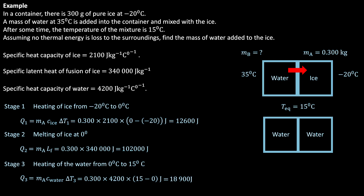Therefore, the total energy absorbed by the ice, which I'll call QA, is equal to Q1 plus Q2 plus Q3, which equals 133,500 joules. This energy was given to the ice from the added water. As a result, the water that was added was cooled down from 35 degrees Celsius to 15 degrees Celsius.